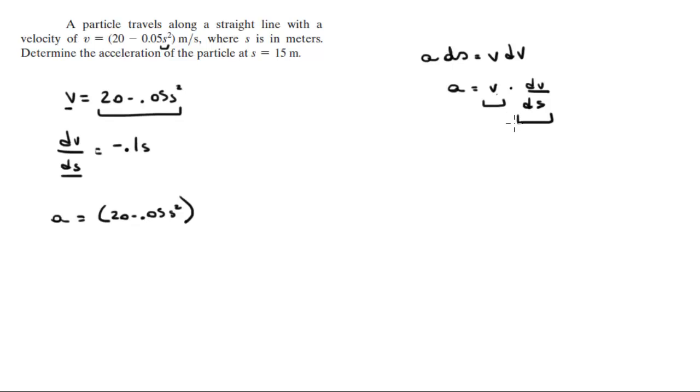And we're going to replace the dv ds with this, minus 0.1s. And now we got a formula for the acceleration with respect to the position.